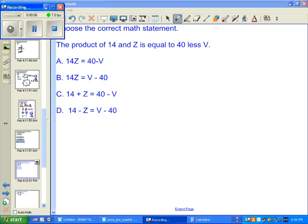The product of 14 and z is equal to 40 less v. Let's take a look here. So we're looking for, initially we're looking for the product of 14 and z.